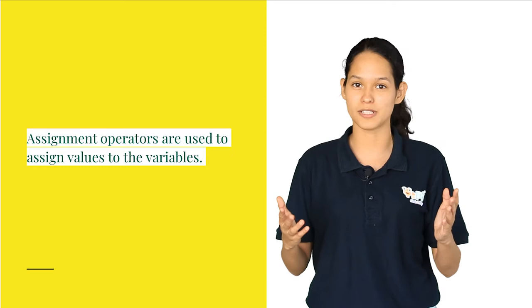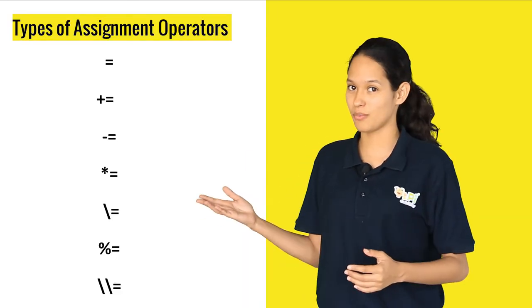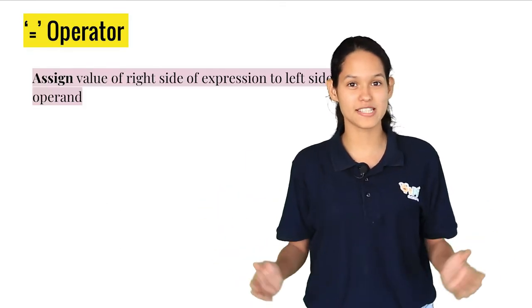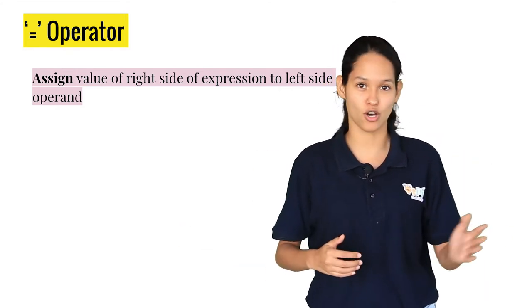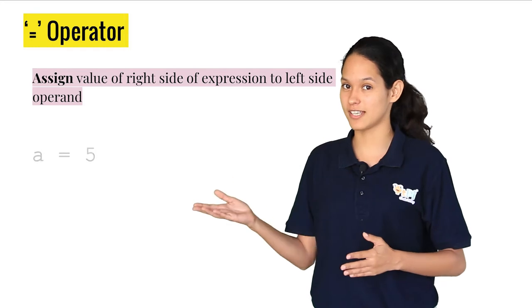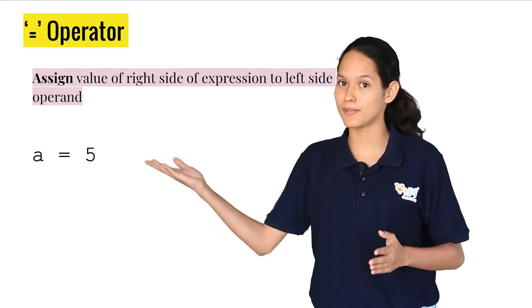Here are some assignment operators. The first operator is the equal to operator. It assigns the right hand side operand to the left hand side operand. For example, it assigns the value 5 to the variable a.